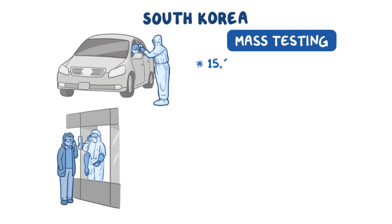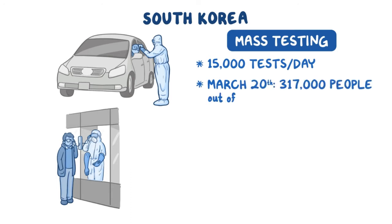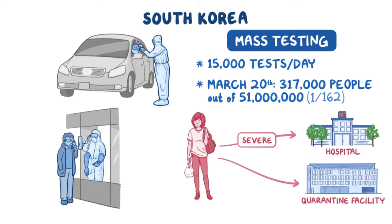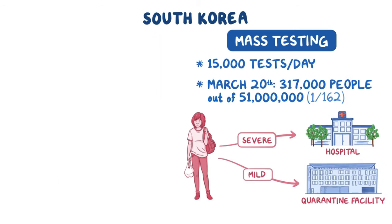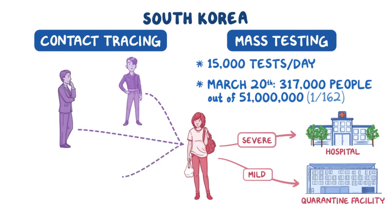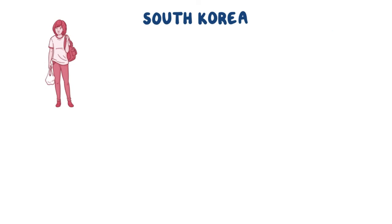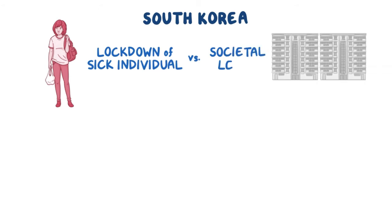South Korea was performing 15,000 tests per day, and by March 20th they had tested around 317,000 people out of a population of 51 million, which works out to 1 out of every 162 people. Those who tested positive were either sent to a hospital if their symptoms were severe or to a quarantine facility if the symptoms were more mild. At the same time, public health workers conducted contact tracing for every case to track down individuals that might have been exposed to the virus. Because South Korea had such a thorough understanding of who did and didn't have COVID-19 and where they had been, the lockdown was effectively done at the level of the sick individual rather than at the societal level like in China.